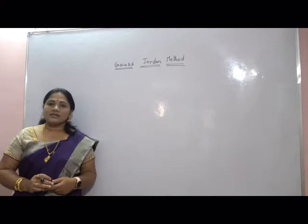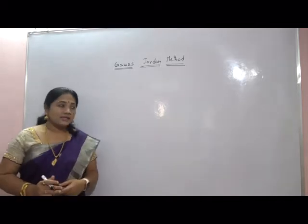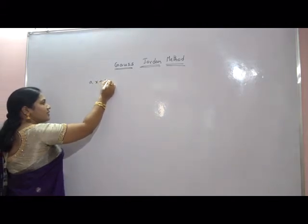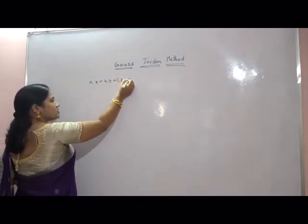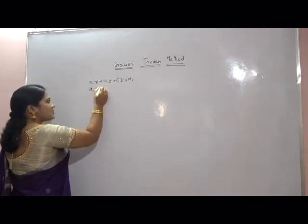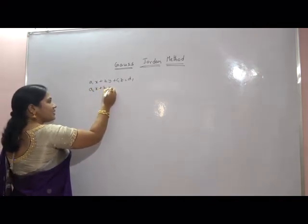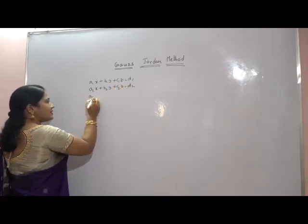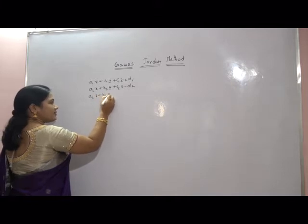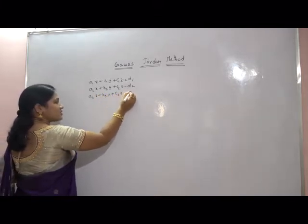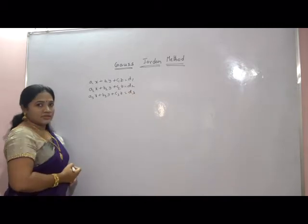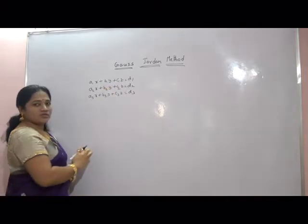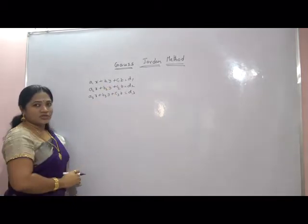Let us consider three simultaneous linear equations: A1x + B1y + C1z = D1, A2x + B2y + C2z = D2, and A3x + B3y + C3z = D3. These are the three equations and the unknowns are x, y, z. We have to find the unknowns using the Gauss-Jordan method.